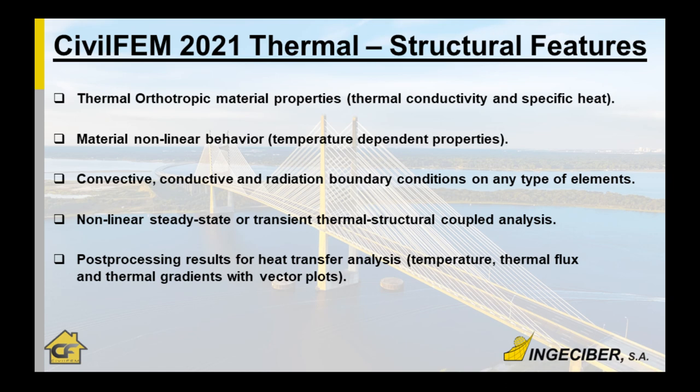The main thermal features are thermal orthotropic material properties — thermal conductivity and specific heat — that are temperature dependent. These properties depend on the temperature and are updated every step with the new temperature values at the integration points. Also, material nonlinear behavior properties are temperature dependent — for example, for steel, the yield point depends on temperature and is updated on every solution step. Many other properties, such as material elongation, also depend on temperature.